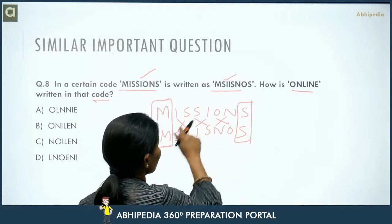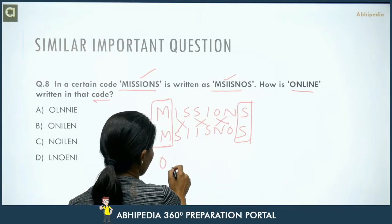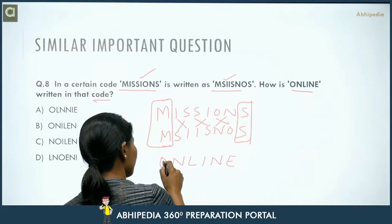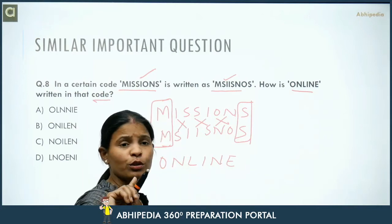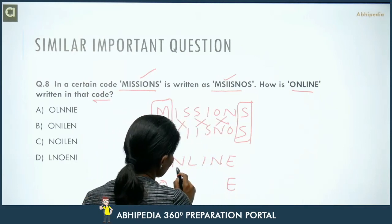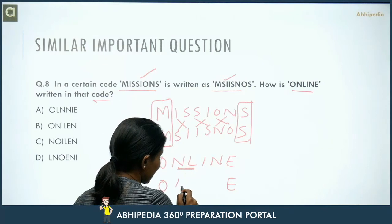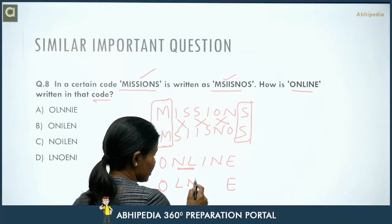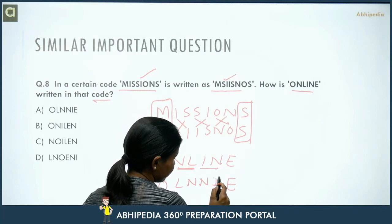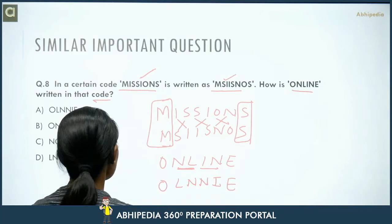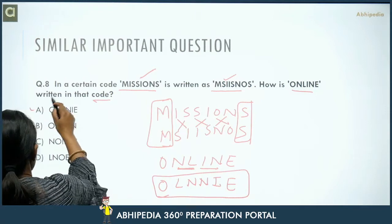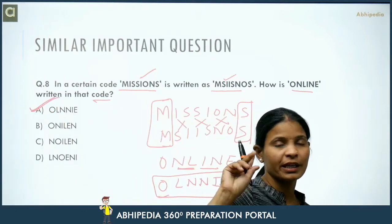Applying the same logic to ONLINE: O and E (first and last) stay. The middle pairs exchange: L and N swap, N and I swap. So the coded form becomes O-L-N-N-I-E, which matches option number one. So option 1 is the correct answer.